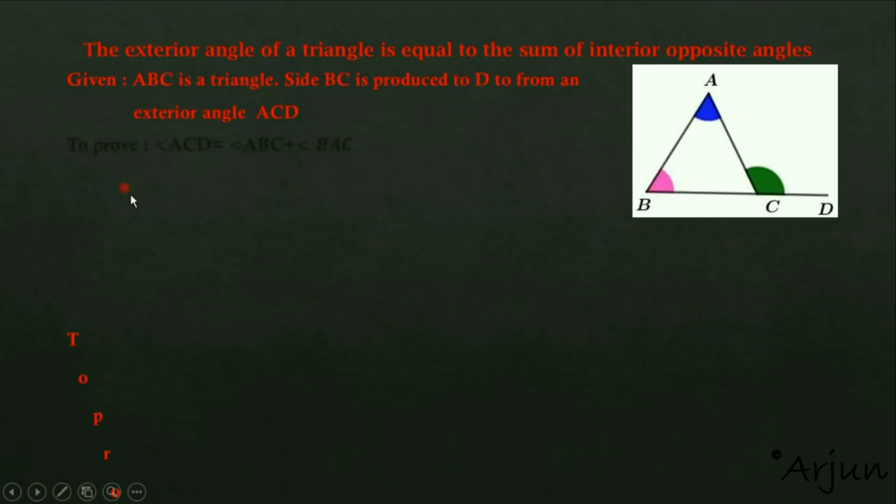So, let's begin our proof. To prove this, we need to show that angle ACD, which is the exterior angle, is equal to angle ABC plus angle BAC, which is the sum of the two opposite interior angles. This is what we need to prove.